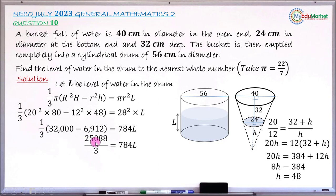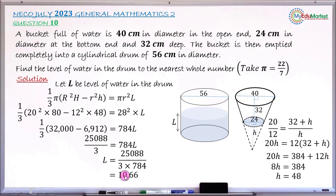So 25,088 divided by 3 = 784L. Cross-multiplying and dividing both sides by the coefficient of L gives L = 25,088 ÷ (3 × 784). Evaluating this correctly gives L = 10.66. The question asks us to give this answer to the nearest whole number, so rounding gives 11 centimeters as the level of the water inside the cylindrical drum.